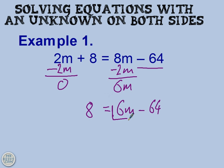So move this side over to the left. 6m take away 64 equals 8. And solve it in a way that you're comfortable solving it. Add 64, etc., etc.